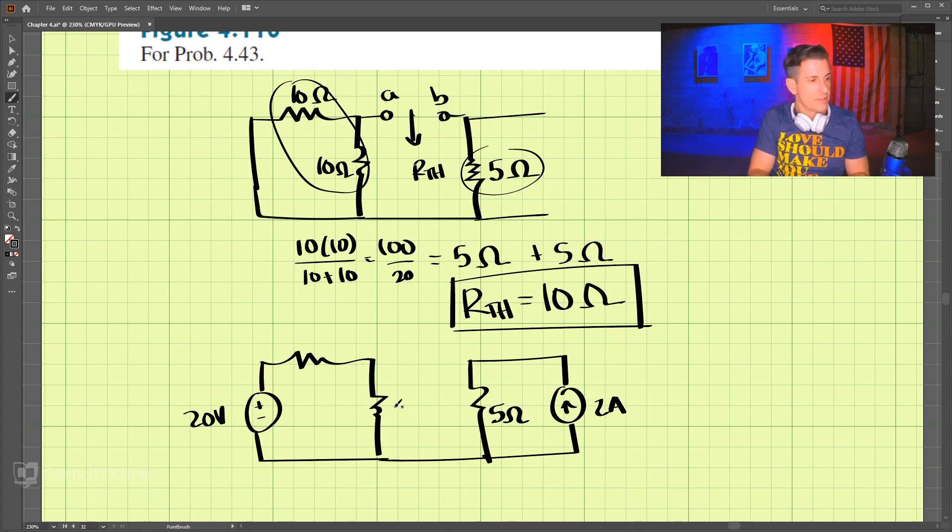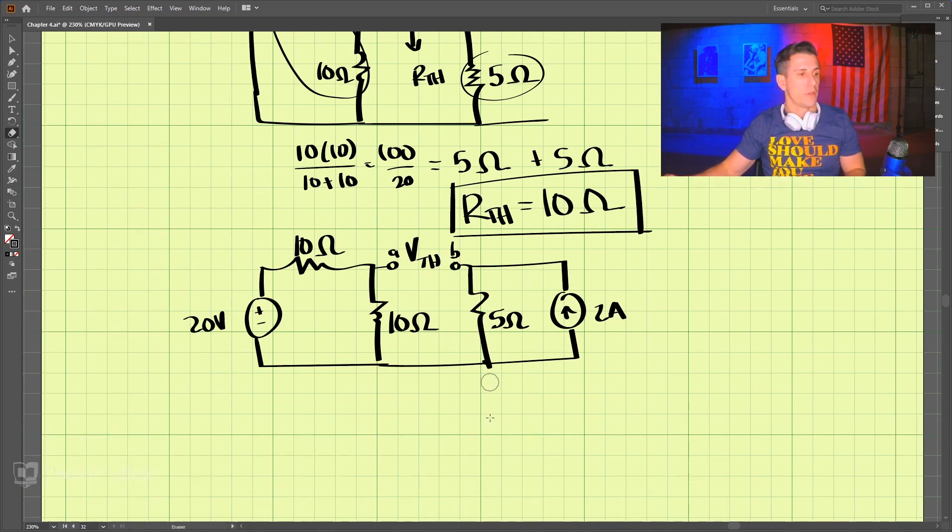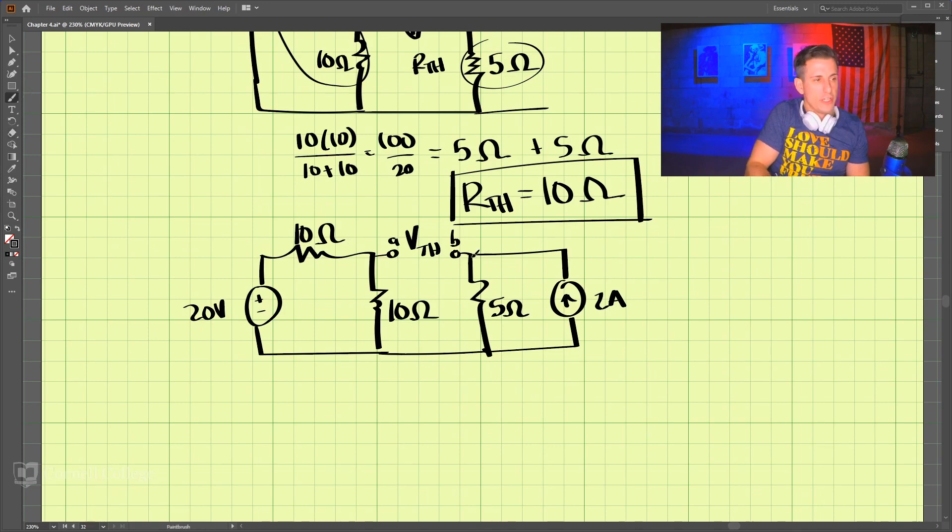This resistance is 10 ohms. And we're looking for the voltage here, the voltage from A to B. We're looking for this voltage across here. So to find that voltage, let's talk about what the voltage is right at this point, right at B.